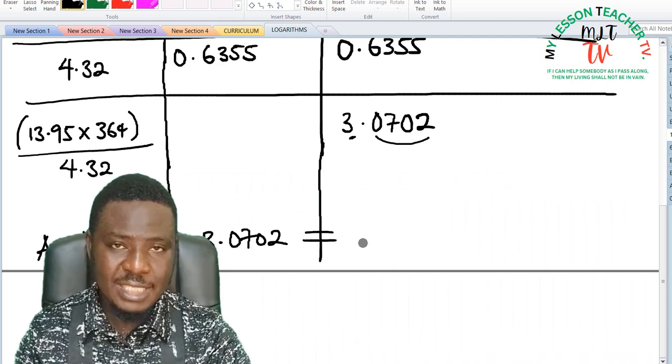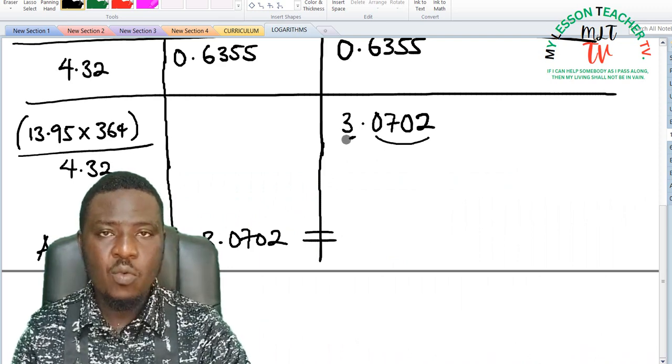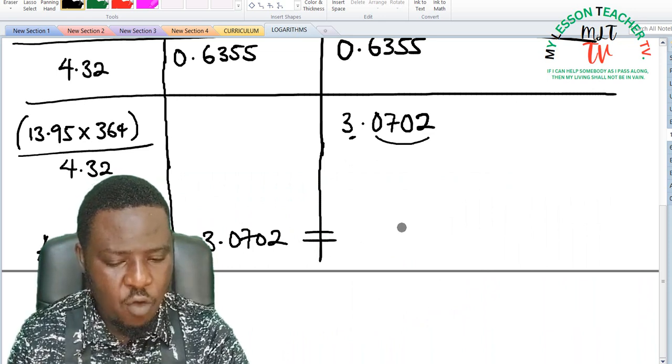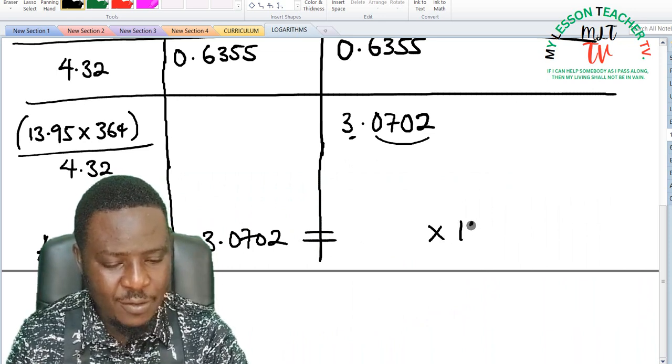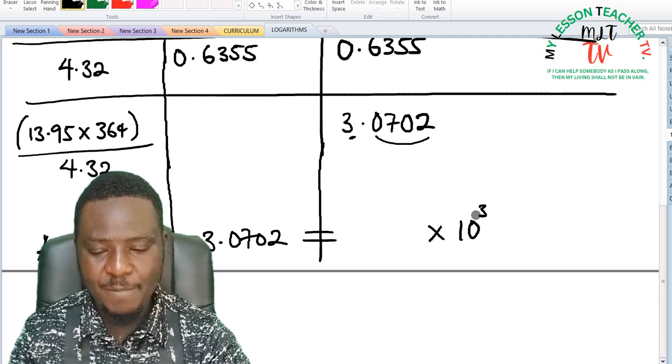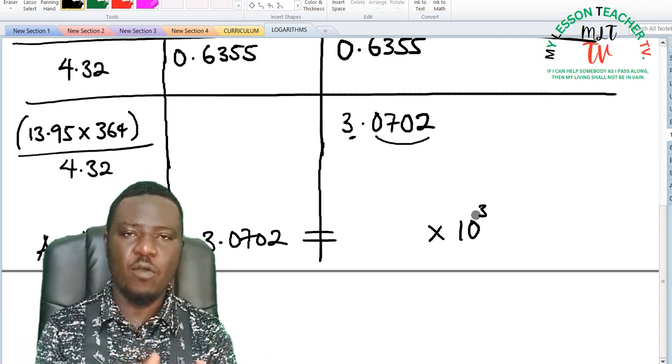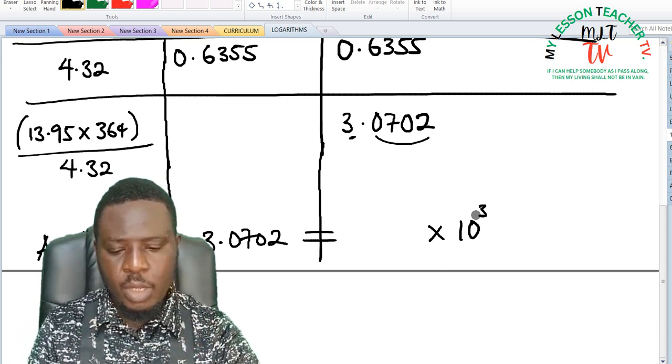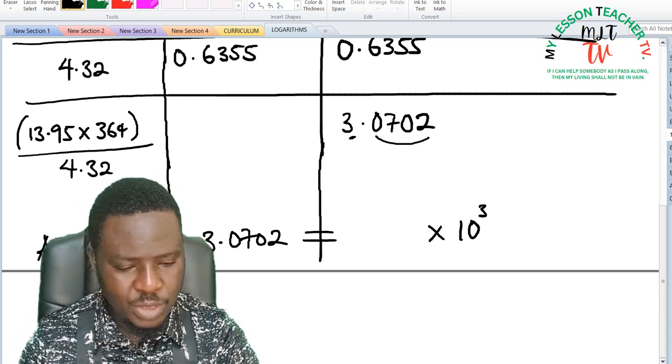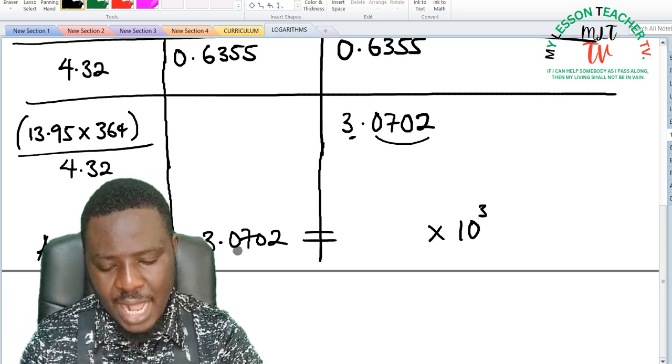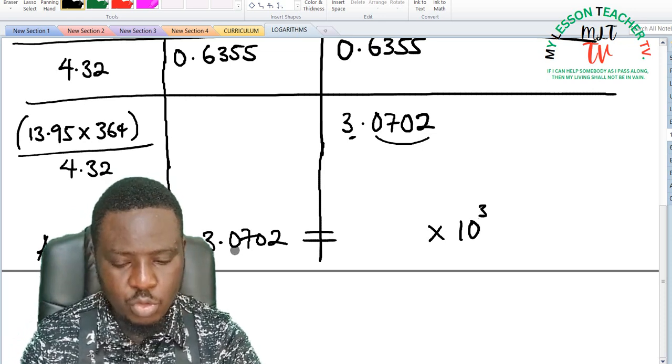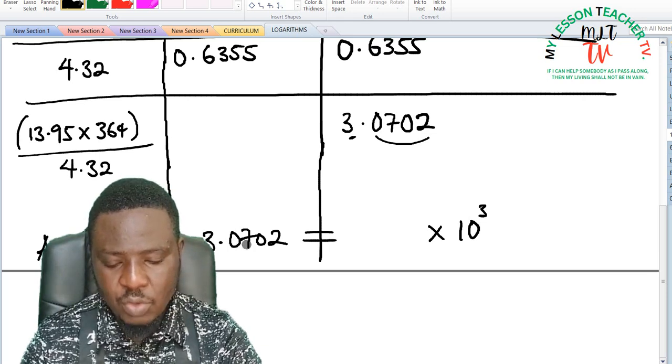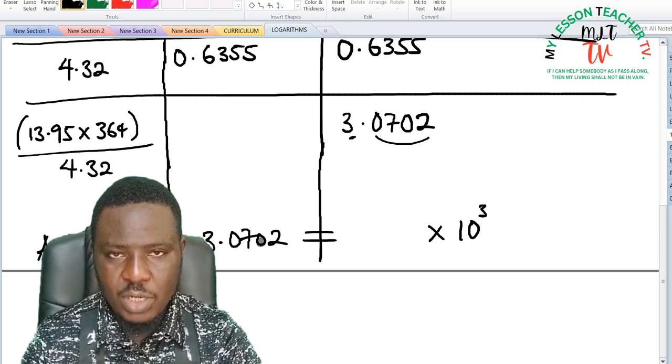Or the value of a in standard form, and 3 will then be the power of 10. So we are going to have our answer to be like 4 digits times 10 raised to the power of 3. So we are converting it back from logarithms to indices. So I have gotten my power to be 3. I am going to look at if I am going to use the anti-log table I will then look at 0.07 under 0 difference 2.